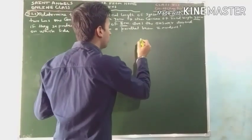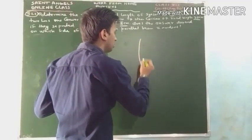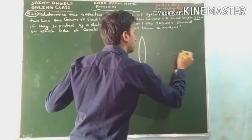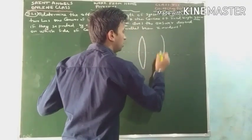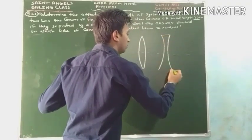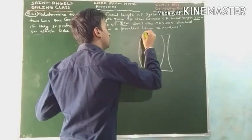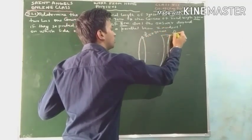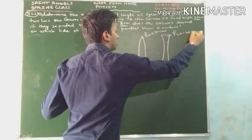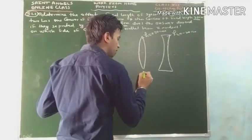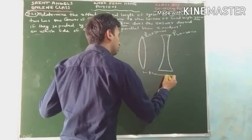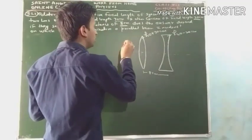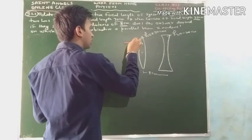According to the given data, first draw the diagram. A system of lenses consists of two lenses — one convex and one concave — with different focal lengths. The convex lens has focal length 30 cm and the concave lens has focal length 20 cm. They are separated by a distance of 8 cm. Consider a parallel beam incident firstly on the convex lens.